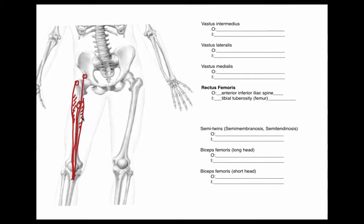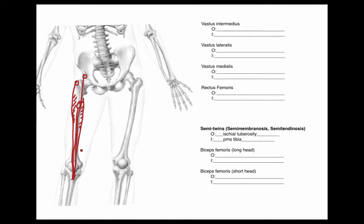So there we have all of our quads. One thing to notice is that three of these muscles only cross one joint — the vastus lateralis, intermedius, and medialis are all going to extend the knee. However, the rectus femoris crosses both the hip joint and the knee joint, so it's going to flex the hip and extend the knee.